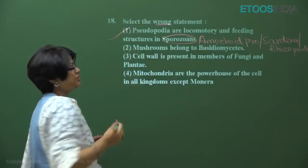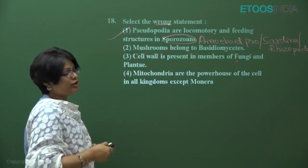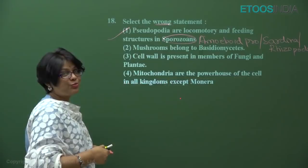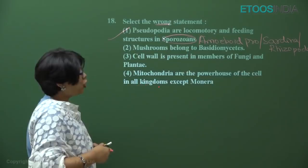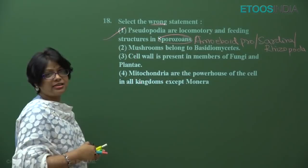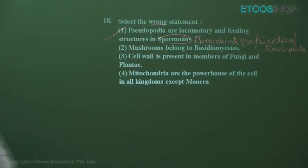So option one would be the answer. The rest of the three options are correct: mushrooms belong to Basidiomycetes; cell wall in fungi is chitinous while in Plantae it is cellulosic; mitochondria are the powerhouse of the cell in all kingdoms except Monera, since Monera includes prokaryotes which lack membrane-bound organelles. Options two, three, and four are absolutely correct. Only option one is wrong.